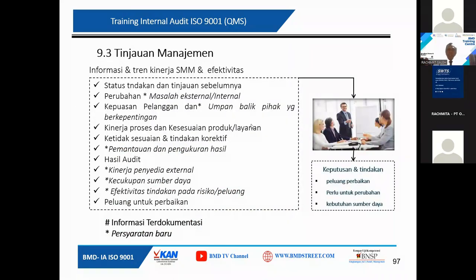Jadi apa saja yang akan jadi tinjauan informasi dan tren kinerja yang efektif? Yang pertama adalah status tindakan dan tinjauan sebelumnya. Biasanya ada tindakan sebelumnya sebelum masuk ke sini. Kemudian ada perubahan masalah internal dan eksternal. Misalnya di perusahaan akan mengadopsi atau mengimplementasi ISO 14000, atau ISO 27000, atau ISO 22000 dan sebagainya. Yang tadinya ada, lalu ditambahkan lagi, itu berarti berubah.